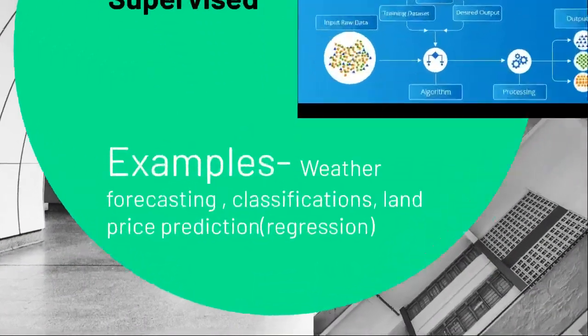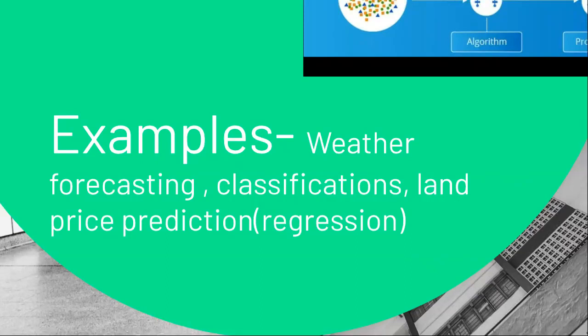An example of supervised learning is weather forecasting. In weather forecasting, data is given such as humidity level, air speed, and temperature, and then the next weather condition is predicted. This is labeled data — it was already given that previously these conditions led to this result. Supervised learning works on two types of problems: one is classification and the second is regression. Regression has two types: linear regression and logistic regression. We will discuss classification and regression in the next video.